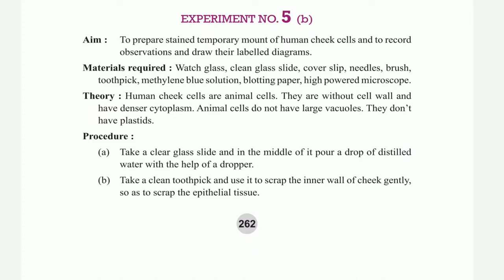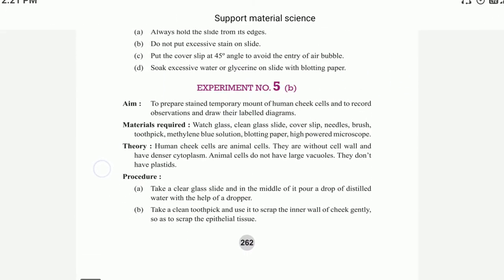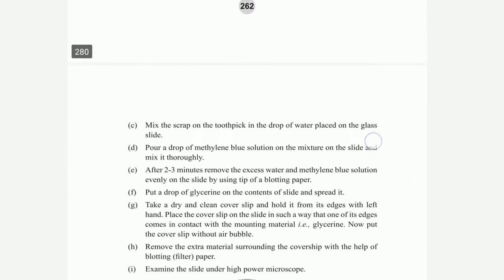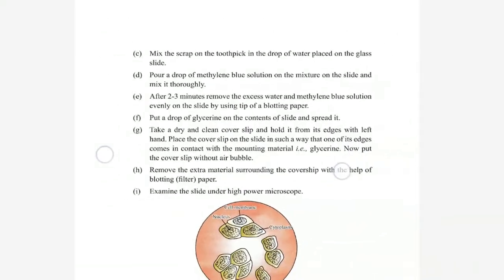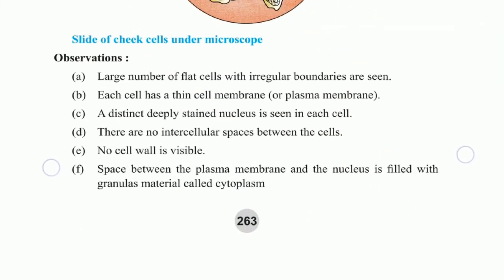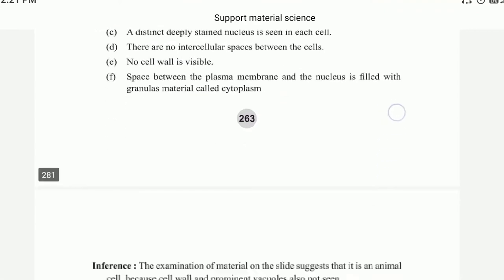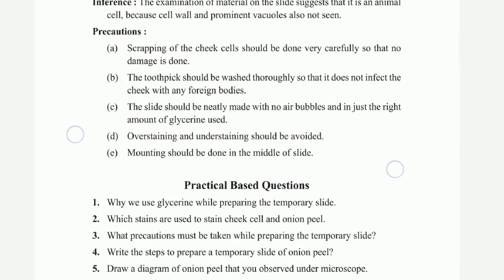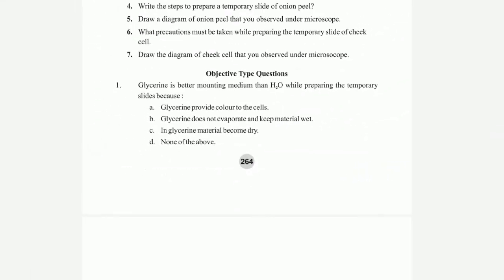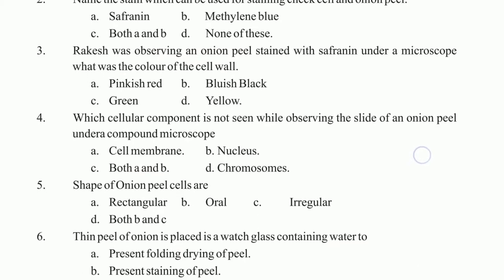There is a distinct nucleus in each cell with a cell membrane. Precautions and activity for experiment number 5 include the procedure, diagram of the slide of cheek cells, inference, practical-based questions, and objective-based questions.